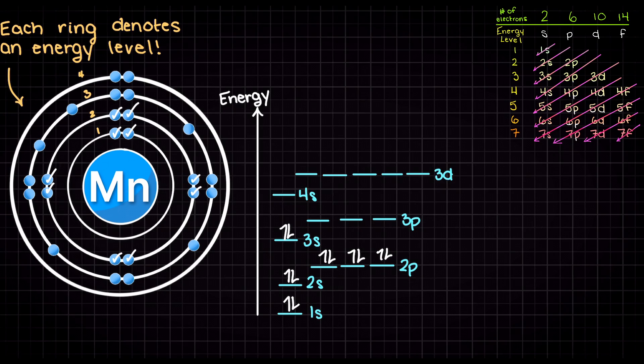Following our energy level diagram we have the 3s subshell next, which can take 2 electrons. We then have another p orbital which can take 6 electrons. Our 4s orbital is next and that can take 2 electrons.